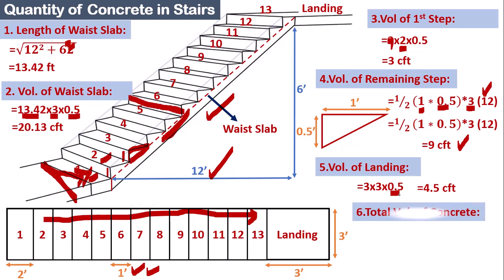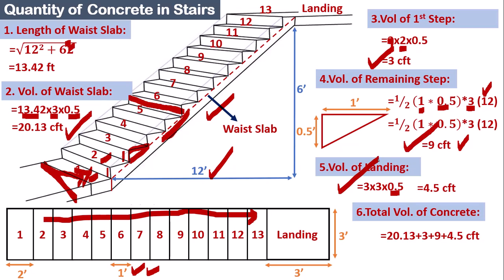Step six: sum up all the values. Volume of waist slab = 20.13 cubic feet, volume of first step = 3 cubic feet, volume of remaining steps = 9 cubic feet, volume of landing = 4.5 cubic feet. Adding all these values gives a total volume of concrete required equal to 36.63 cubic feet.